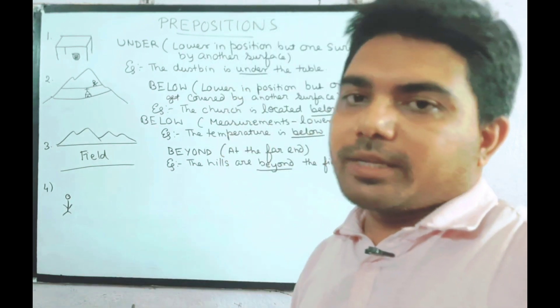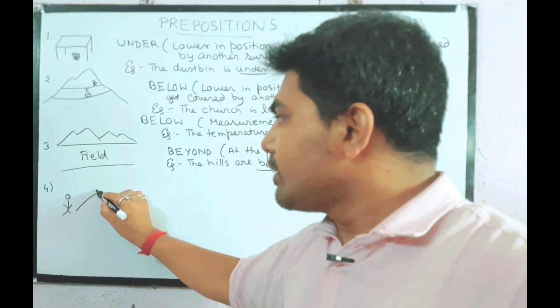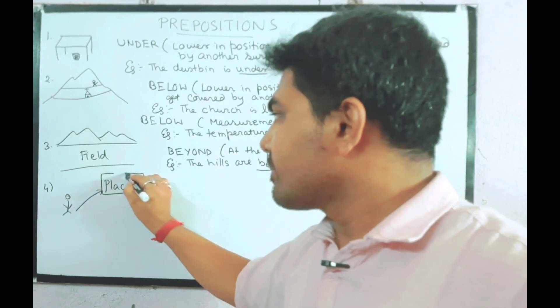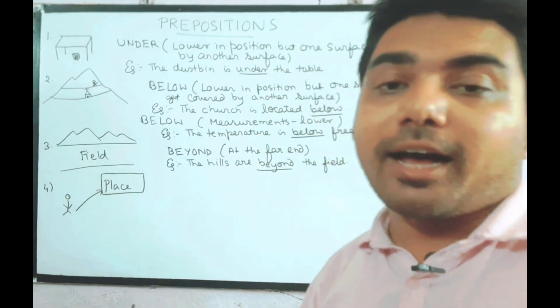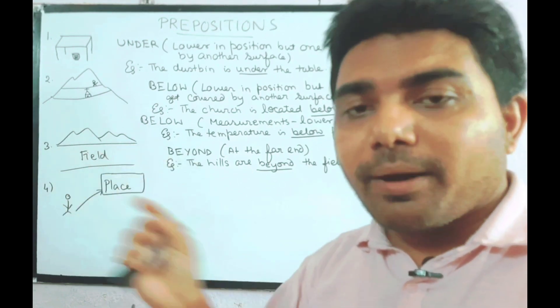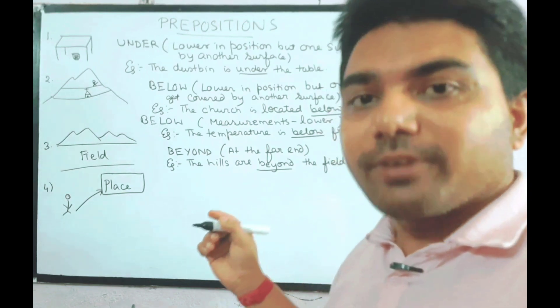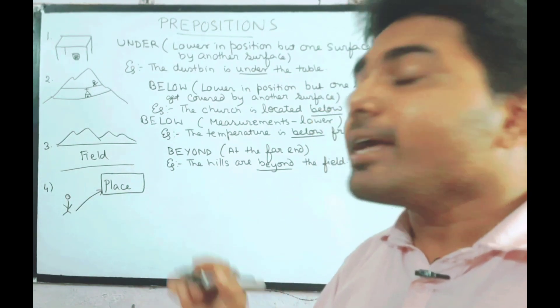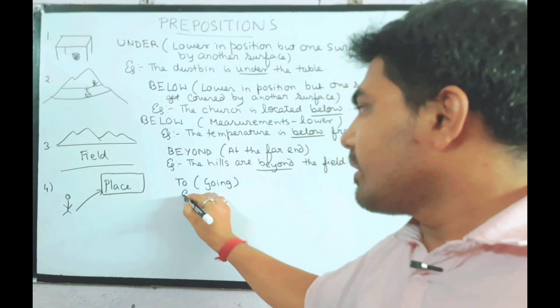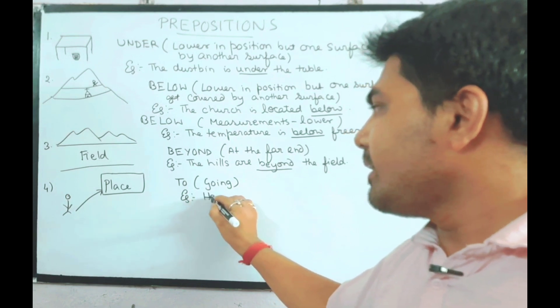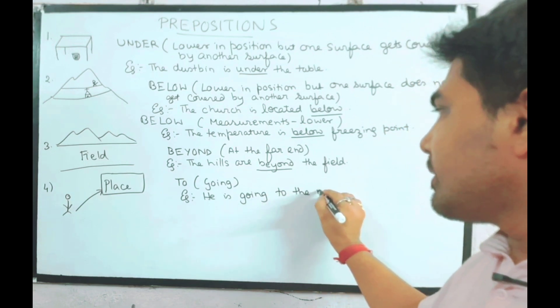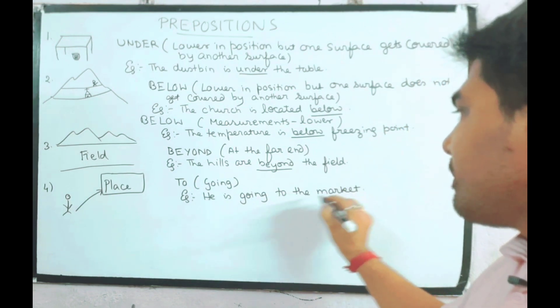Now suppose this is a person, he is going to a particular place. So which preposition will we use? He is going to the market. Very good. So 'to' denotes going. Example: he is going to the market.